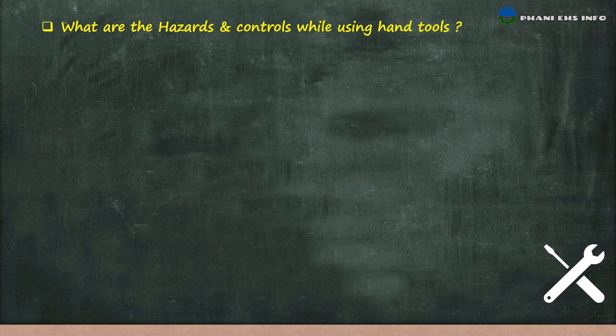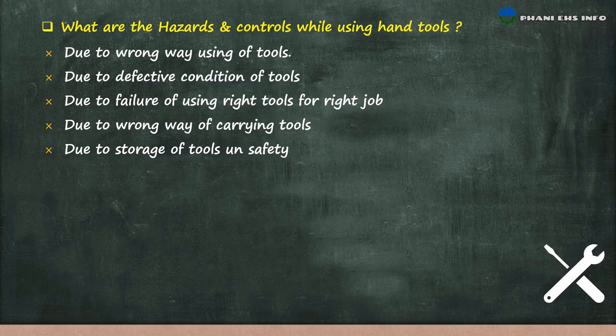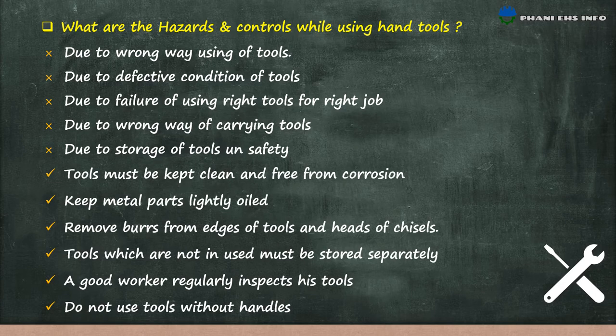What are the hazards and controls while using hand tools? Hazards arise from using tools the wrong way, defective condition of tools, failure to use the right tool for the right job, wrong way of carrying tools, and unsafe storage of tools. Control measures: tools must be kept clean and free from corrosion; keep metal parts slightly oiled; remove burrs from edges of tools and heads of chisels; tools not in use must be stored separately; a good worker regularly inspects his tools; do not use tools without handles.